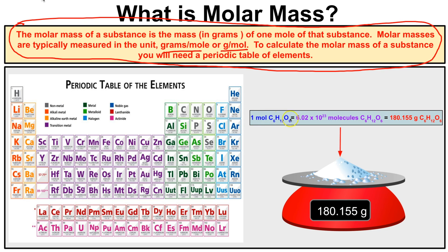What is molar mass and how does it work? Let's suppose we have some glucose, or sugar. Its chemical formula is C6H12O6. One molecule of glucose consists of six atoms of carbon, 12 atoms of hydrogen, and six atoms of oxygen. If we have one mole of glucose molecules, we will have 6.02 times 10 to the 23rd molecules of glucose, and if we put one mole of glucose on a scale its mass will be 180.155 grams of C6H12O6.